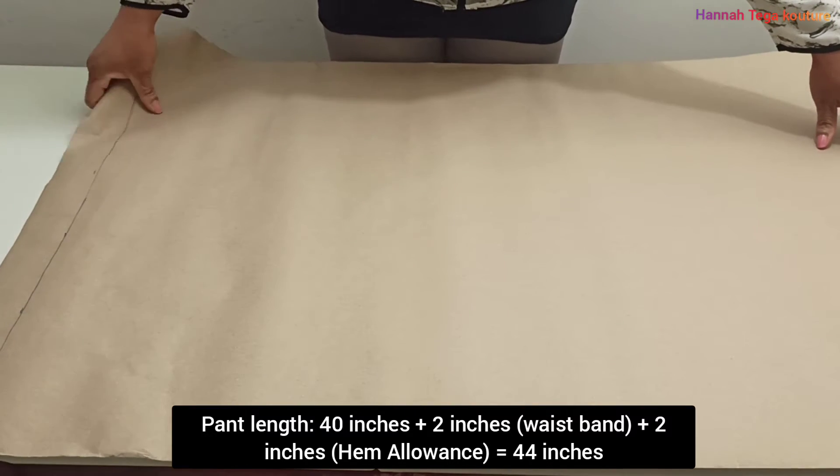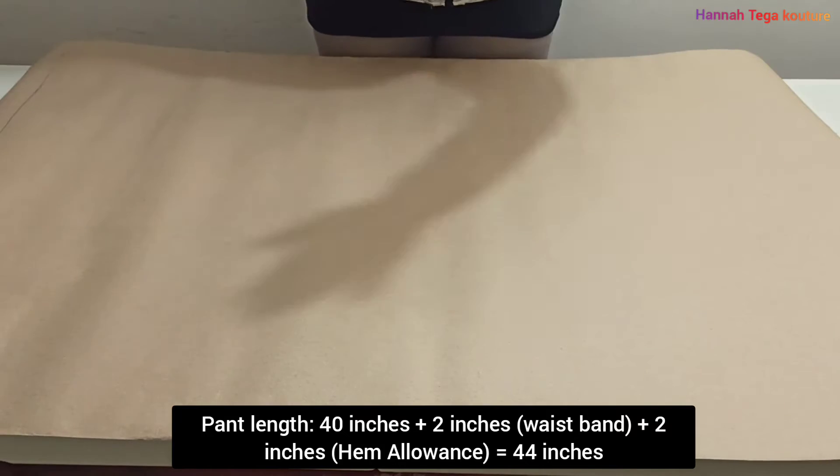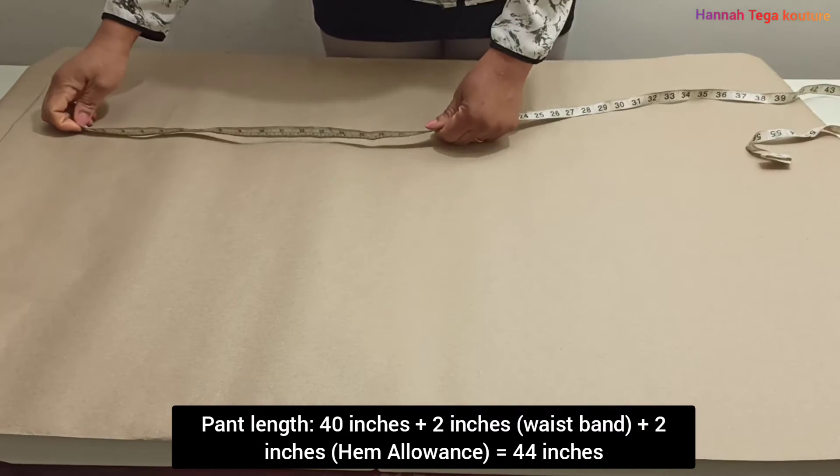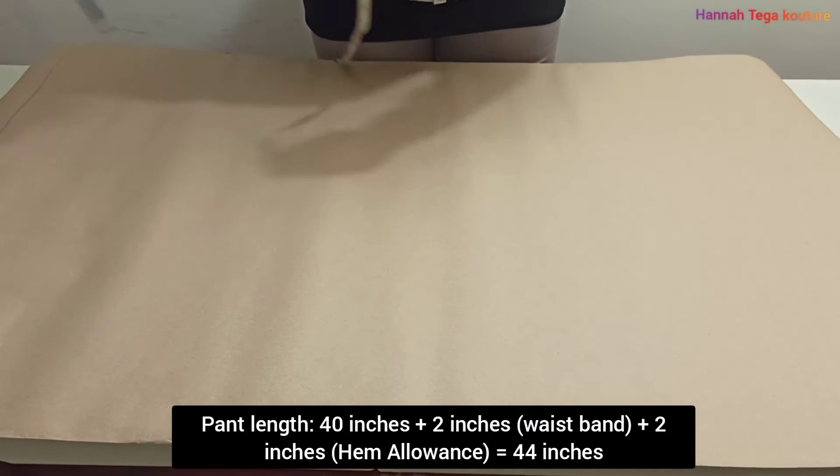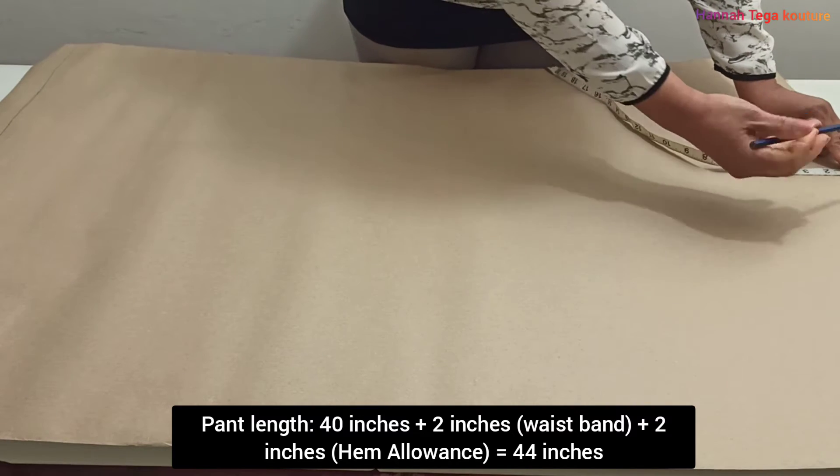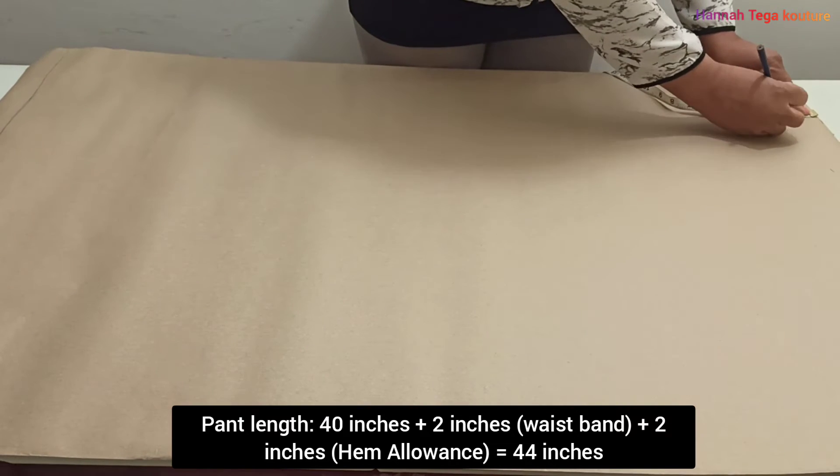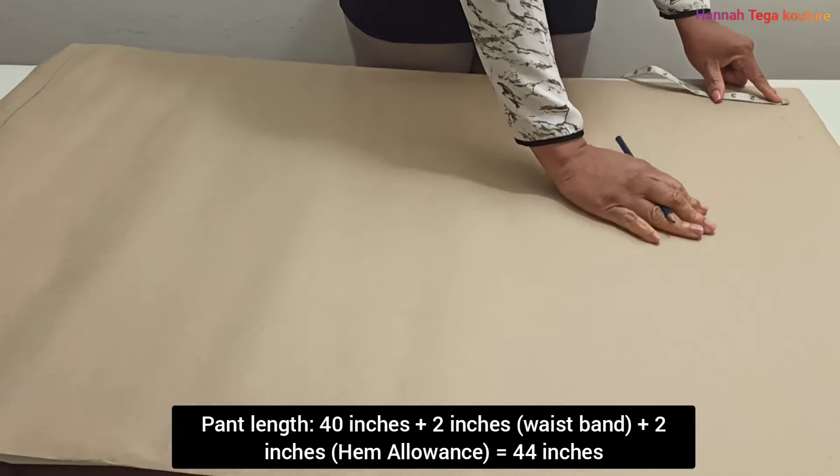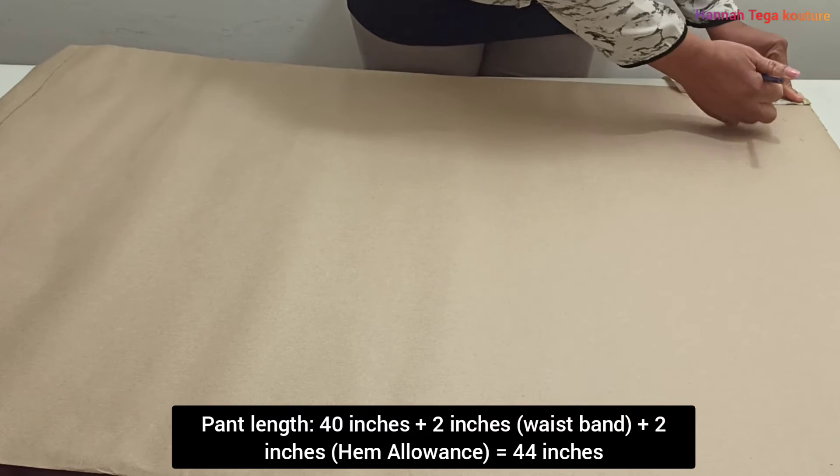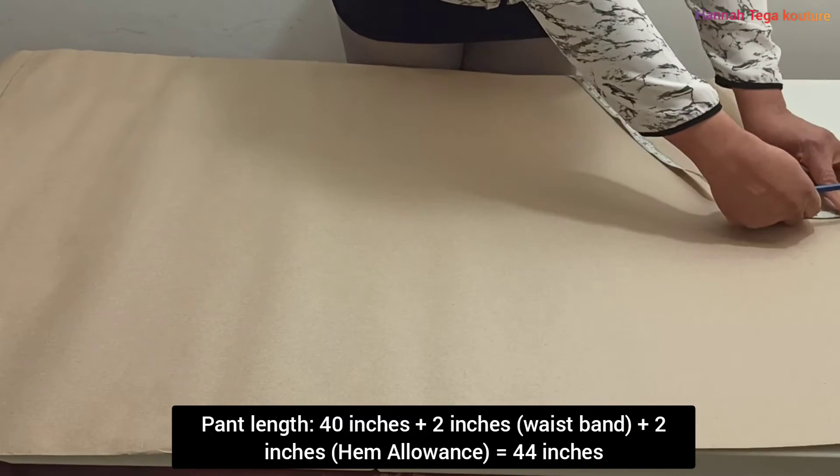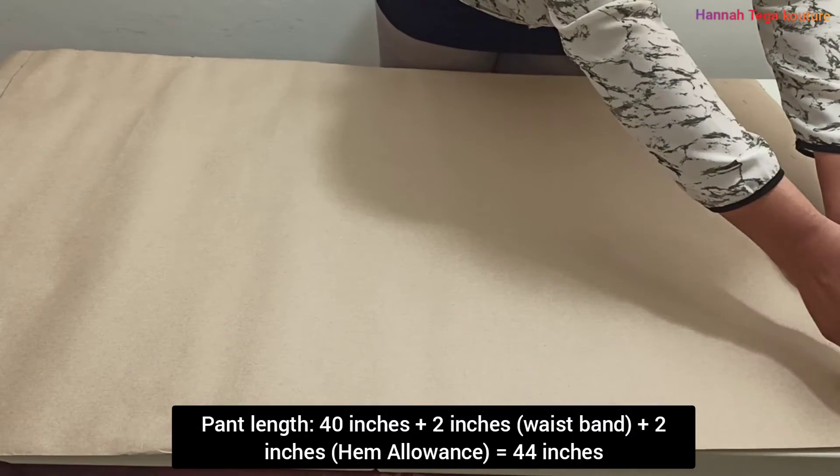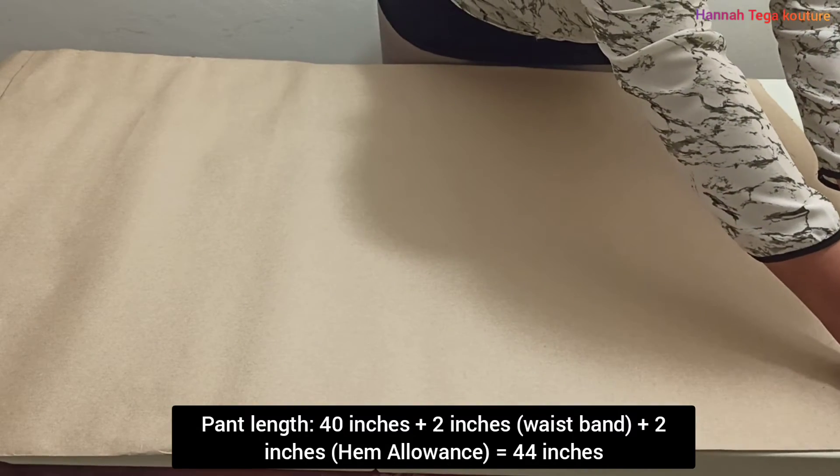Once that is completed, you want to go to the bottom of the paper and take two inches for the hem line, I would say the hem allowance. So you make your markings, all the necessary markings, and connect it with a straight line. Connect all the dots markings with a straight line.